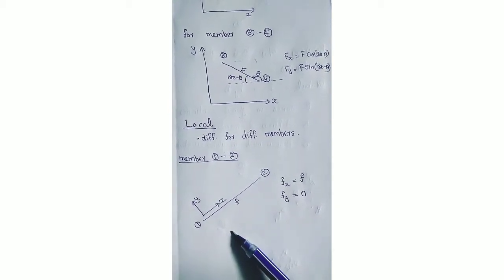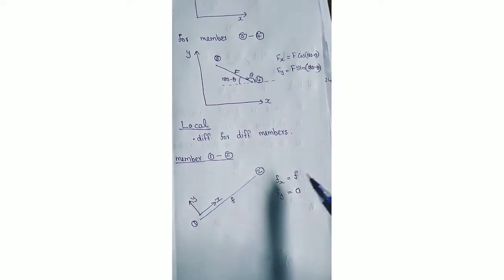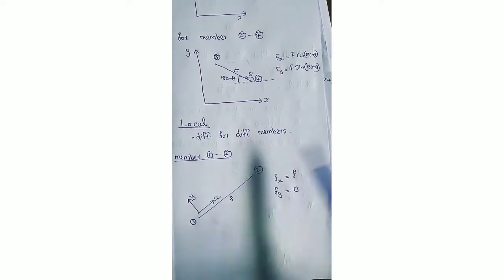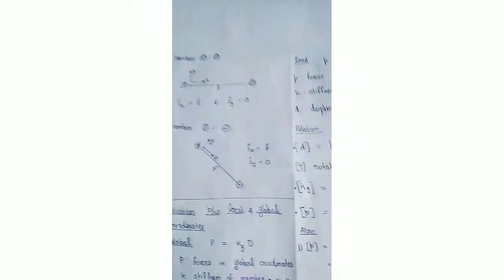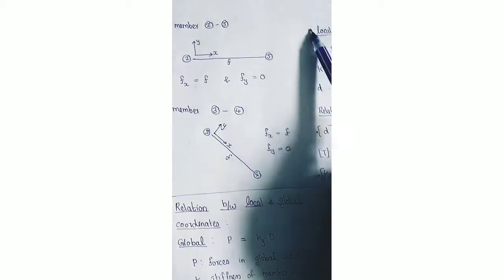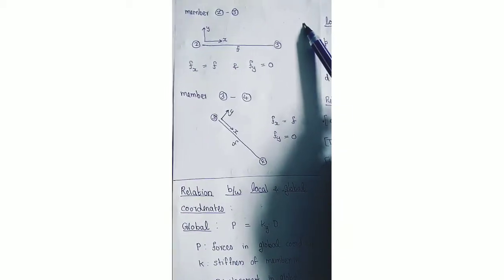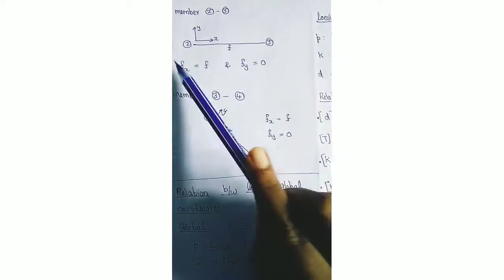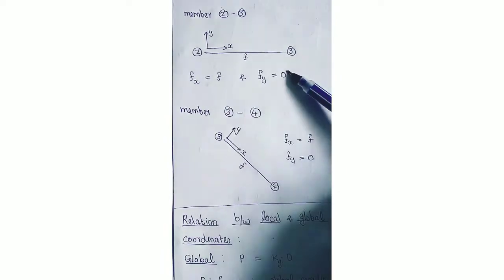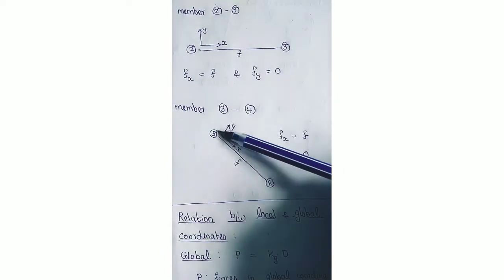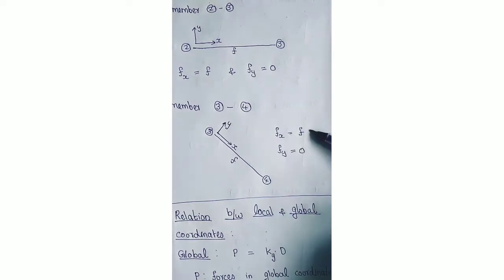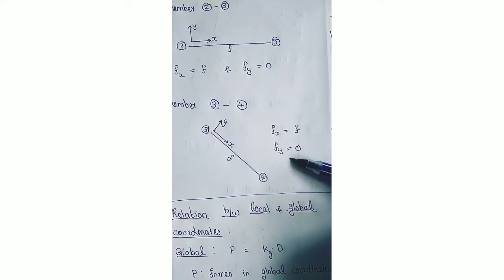Regarding forces in local coordinates: for member 1-2, the force in the x-direction fx is f itself and in the y-direction fy is 0, because the local x-axis is parallel to the member. Similarly, for member 2-3, direction 2 to 3 is positive x, and fx = f, fy = 0. For member 3-4, direction 3 to 4 is positive x, and fx = f, fy = 0.